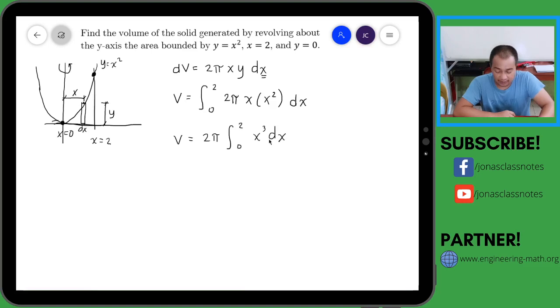Okay, now we can integrate. So this is 2π and then x raised to 4 over 4, and then evaluate natin ito from 0 to 2. So 2π and then 2 raised to 4 over 4 minus 0.